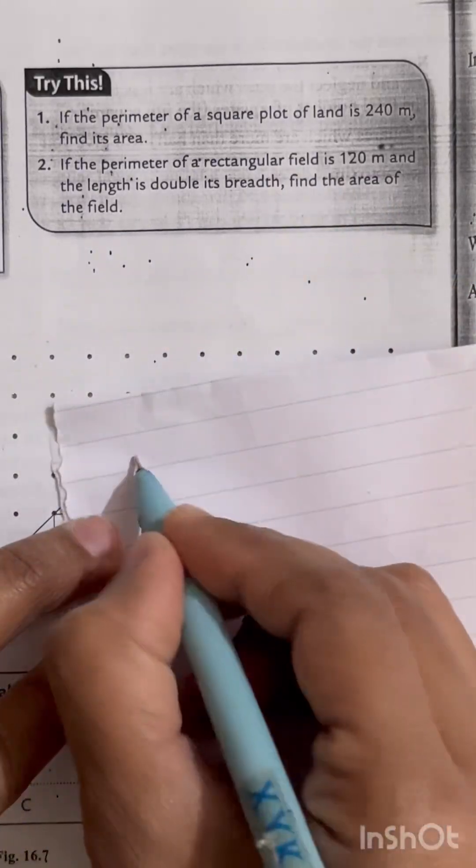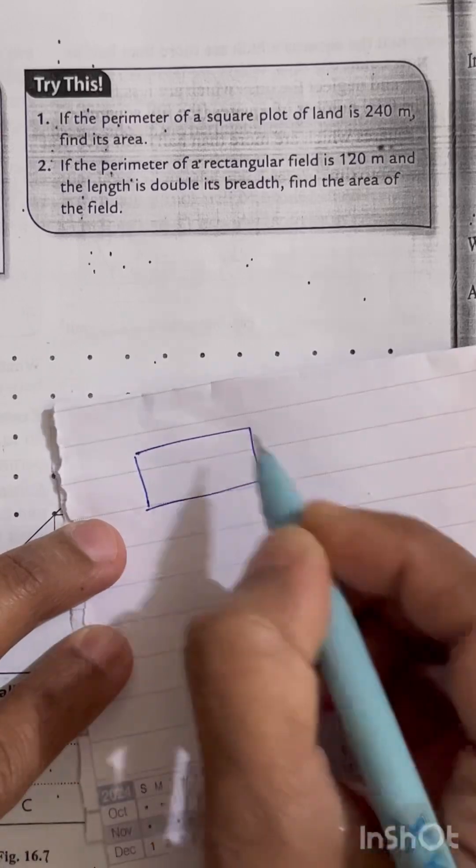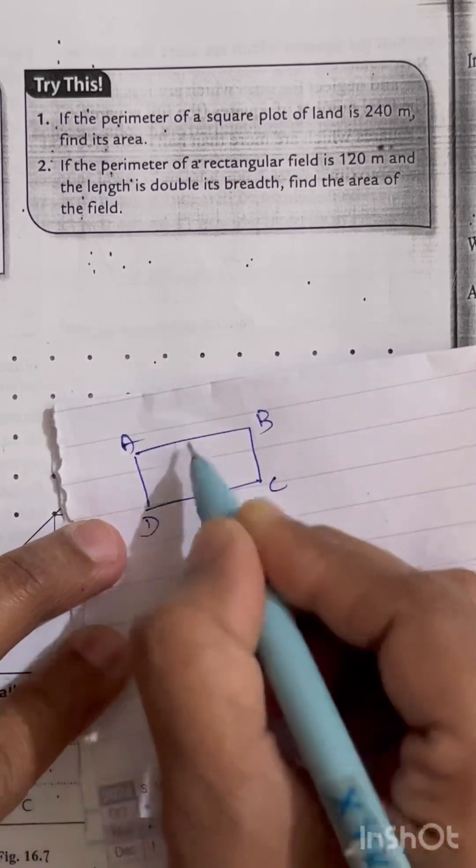First of all, the field is in a rectangle shape. So what we know about the rectangle shape is that opposite sides will be equal in length.